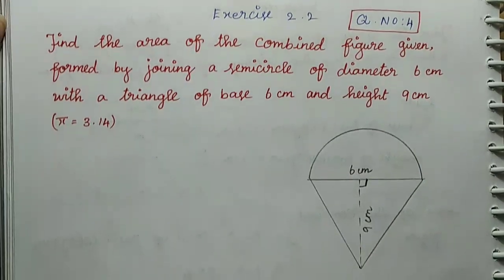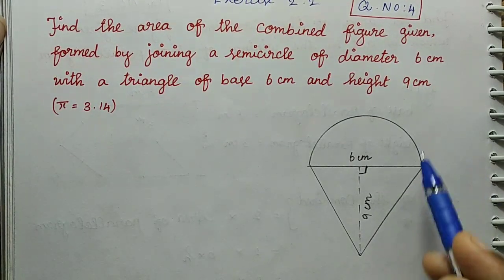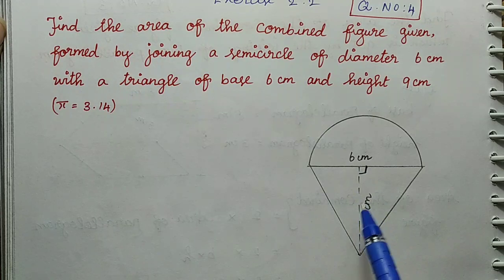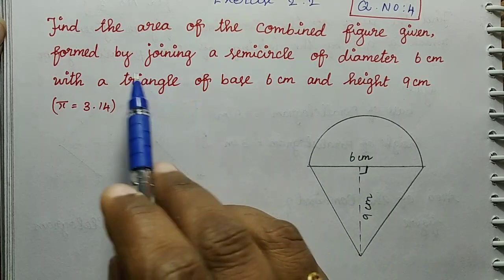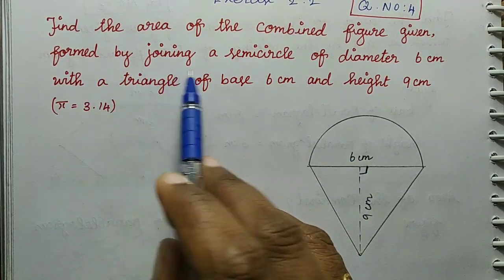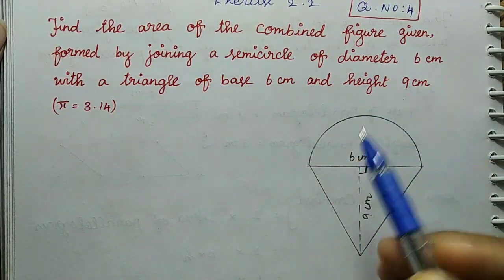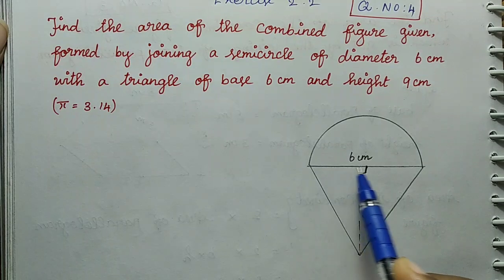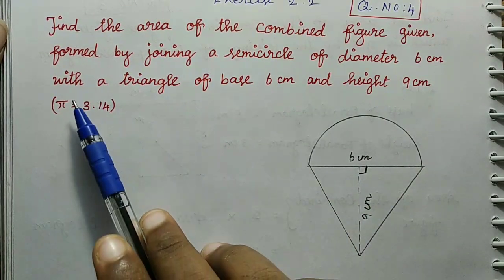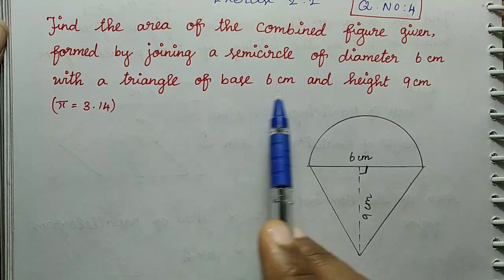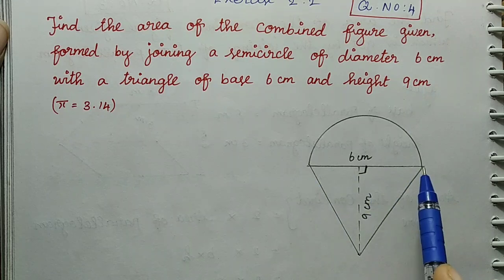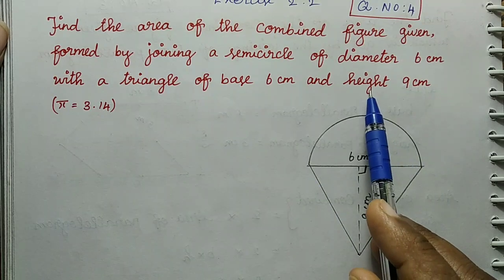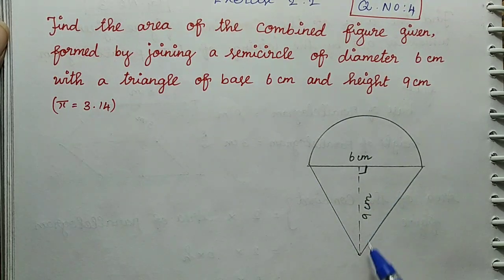You can see the combined shape here. This is a semicircle of diameter 6 cm with a triangle. The semicircle has diameter 6 cm, and the triangle has base 6 cm attached on the diameter and height 9 cm. This is the total diagram area.